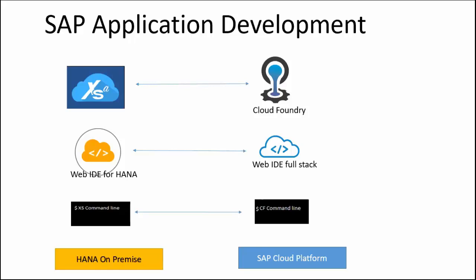In my previous video series, I was primarily focusing on XS Advanced Server and was using WebIDE for HANA to build and deploy applications on-premise. XS Advanced is an on-premise version of Cloud Foundry environment and they both follow the same architecture principles in general. Cloud Foundry is a platform-as-a-service offering where developers can just focus on business application development and don't have to worry about the infrastructure. Cloud Foundry is an open source platform based on microservices architecture.